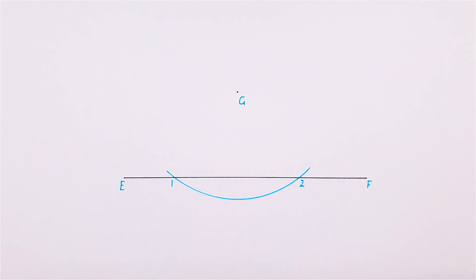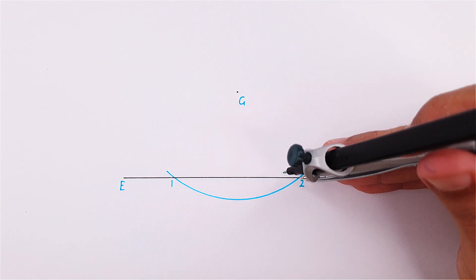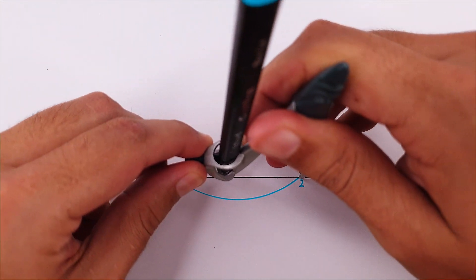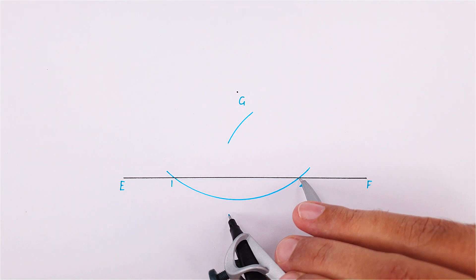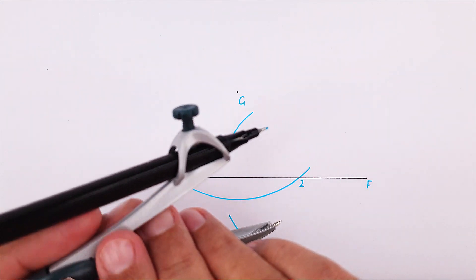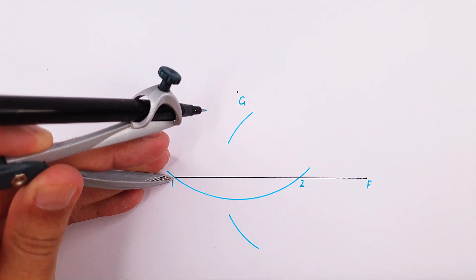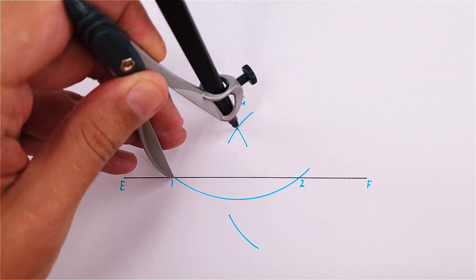Next we will draw a perpendicular bisector using points 1 and 2. Place your compass on point 2 and adjust it to more than half the distance to point 1. Draw an arc above and below line EF. Using the same measurement, do the same on point 1.